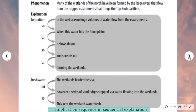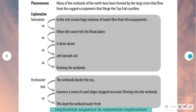Sequential explanations are typically constructed as a series of events in which an obligatory causal relation is implied between each event. This example explains how wetlands are formed along the coastline of northern Australia by water flowing during the tropical wet season. The explanation genre is signaled in the first sentence: 'many of the wetlands of the north have been formed.' The explanation stage answers the question 'how are they formed?' and consists of two phases — the first explaining how the wetlands are formed in lowlands, and the second explaining how the water is kept fresh.